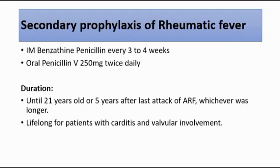For secondary prophylaxis of rheumatic fever, we give intramuscular benzathine penicillin every 3 to 4 weeks, and also oral penicillin V twice daily. If they are allergic to penicillin V, we use oral erythromycin at the same dose. This prophylaxis is usually given until the patient is 21 years old or 5 years after the last attack of acute rheumatic fever, whichever is longer. If the patient has carditis and valvular involvement, we give them lifelong prophylaxis.